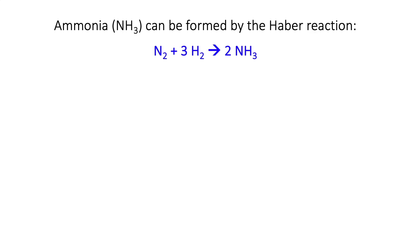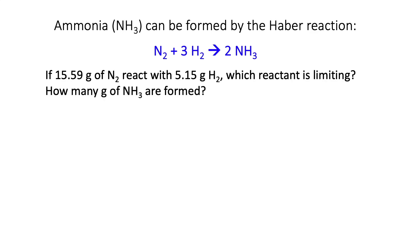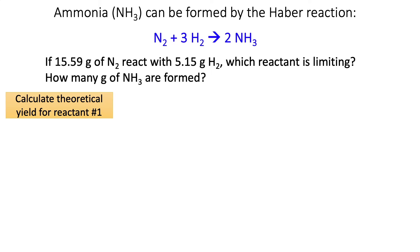Let's look at a different reaction — the Haber reaction, where we combine nitrogen gas and hydrogen gas to form ammonia gas. Here we're going to react 15.59 grams of nitrogen with 5.15 grams of hydrogen. The question is which is our limiting reactant and how many grams of ammonia are formed? Again, we're going to start by calculating the theoretical yield for our first reactant, going in the order of the problem — so let's start with nitrogen.